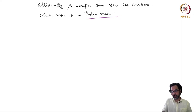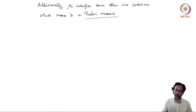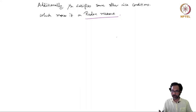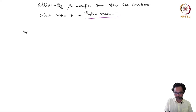So, the mu_lambda induced by the positive linear functional lambda is a so-called Radon measure. Before we come to the proof of the Riesz Representation Theorem, let us look at the definition of a Radon measure and see some nice properties that Radon measures enjoy on locally compact Hausdorff spaces.